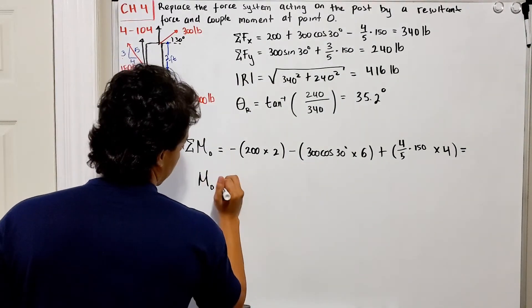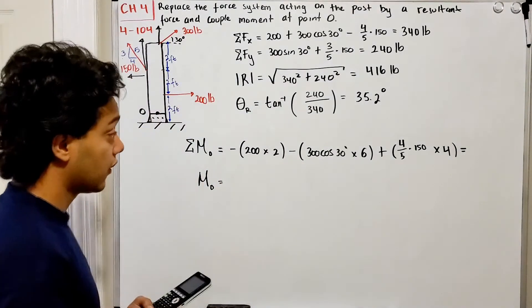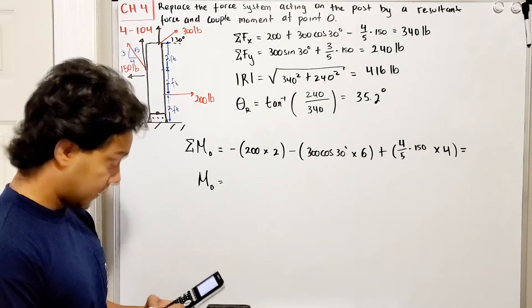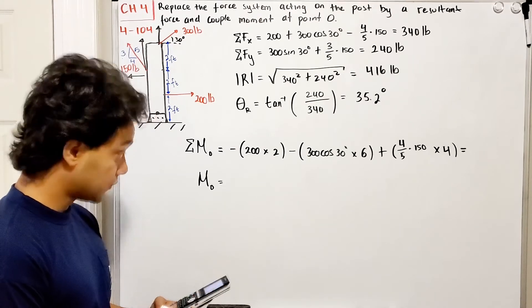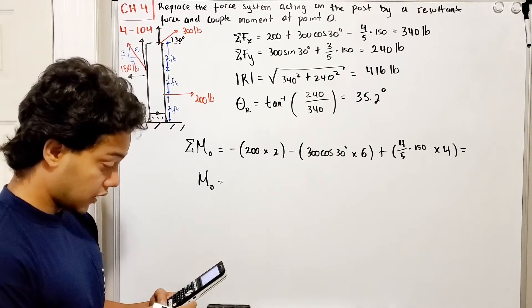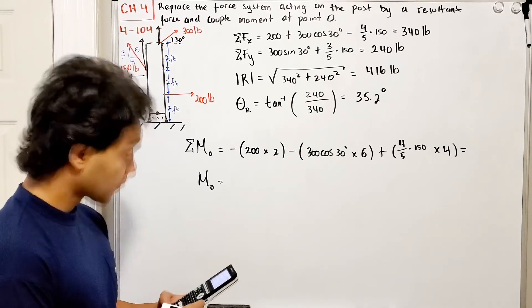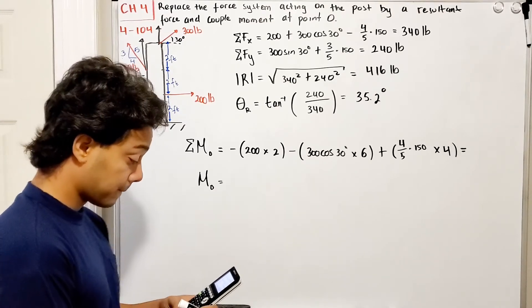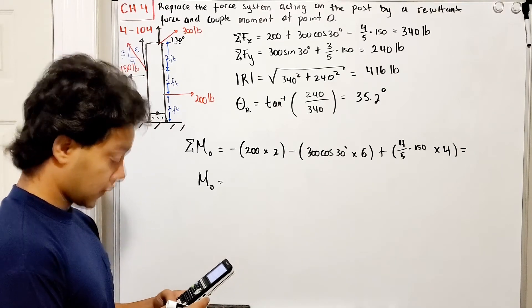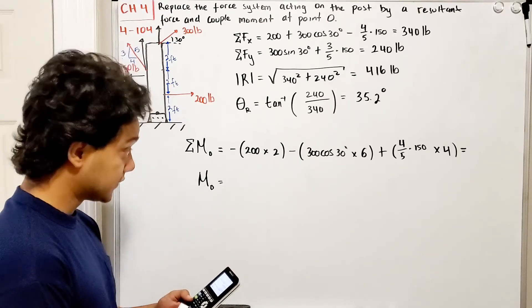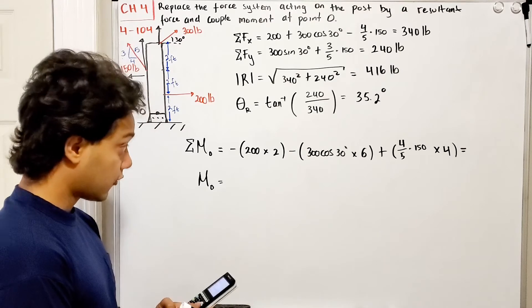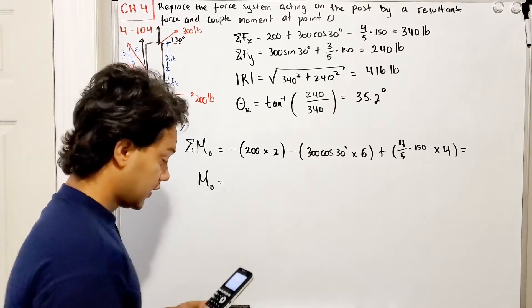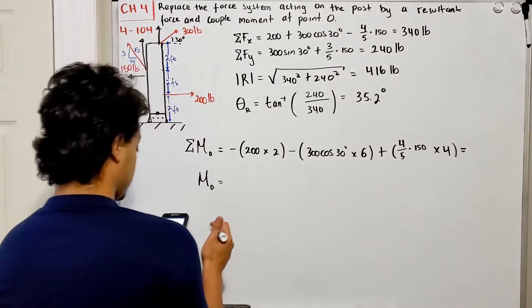What is this equal to? My moment around point O is going to be equal to negative 200 multiplied by 2, which is negative 400, minus 300 cosine of 30 degrees multiplied by 6, and then we have plus four-fifths multiplied by 150 multiplied by 4.